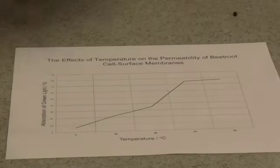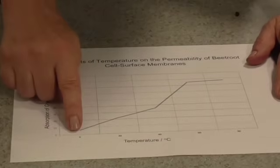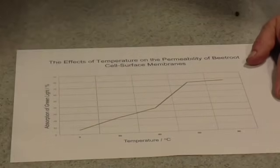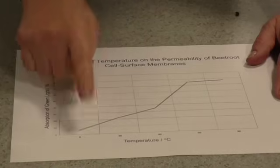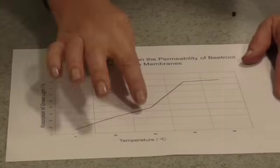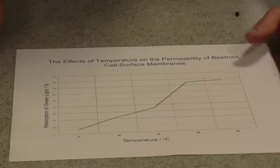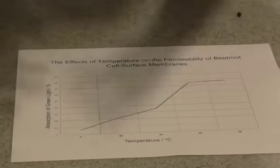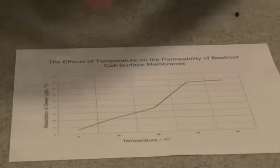At fairly low temperatures — between about 0 and 40 degrees — as temperature increases, we seem to get a gradual increase in the amount of anthocyanin being released from the cells. This is probably due to the fact that increasing temperature results in more kinetic energy, which means all of the phospholipids in the membrane start to move around a little bit more. The membrane generally becomes more fluid, and more anthocyanin is able to just escape — just to diffuse out.